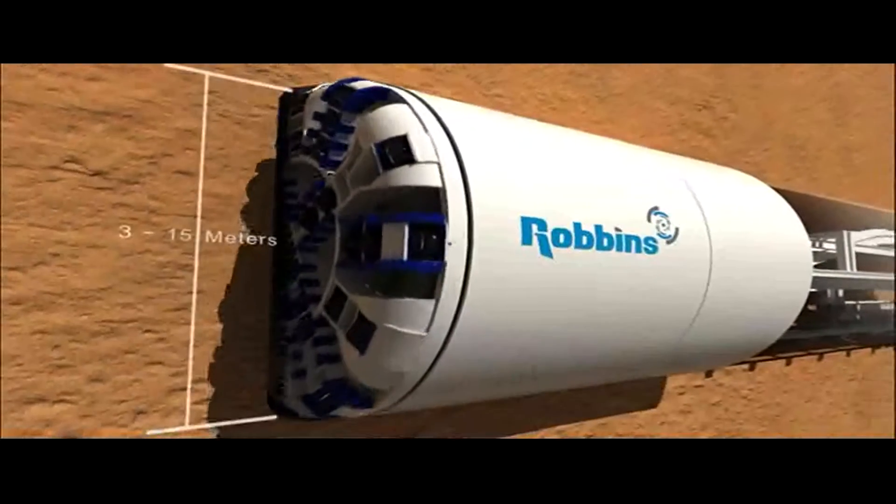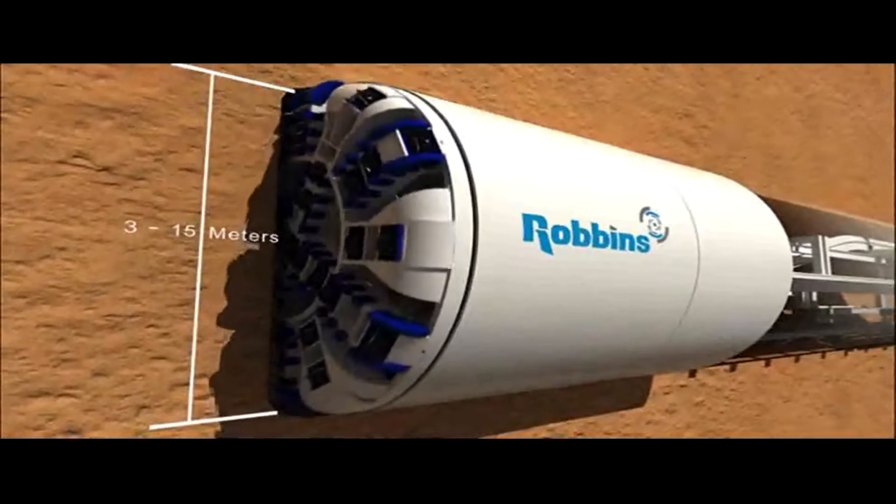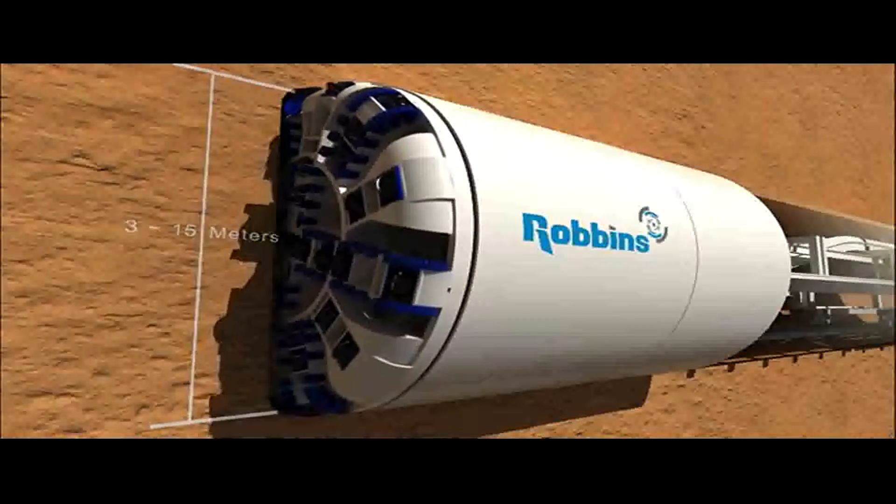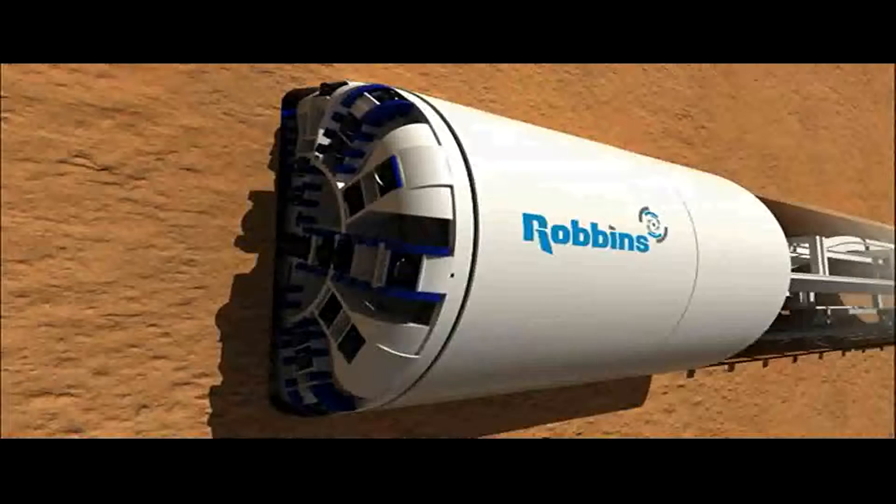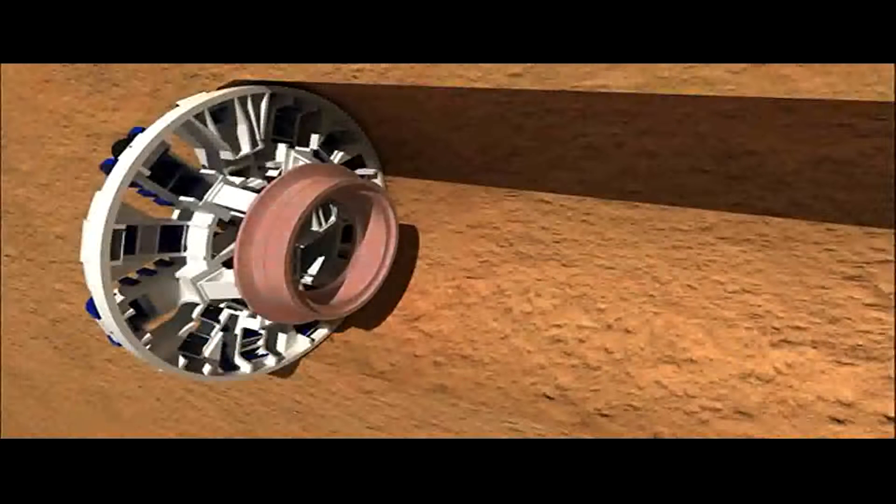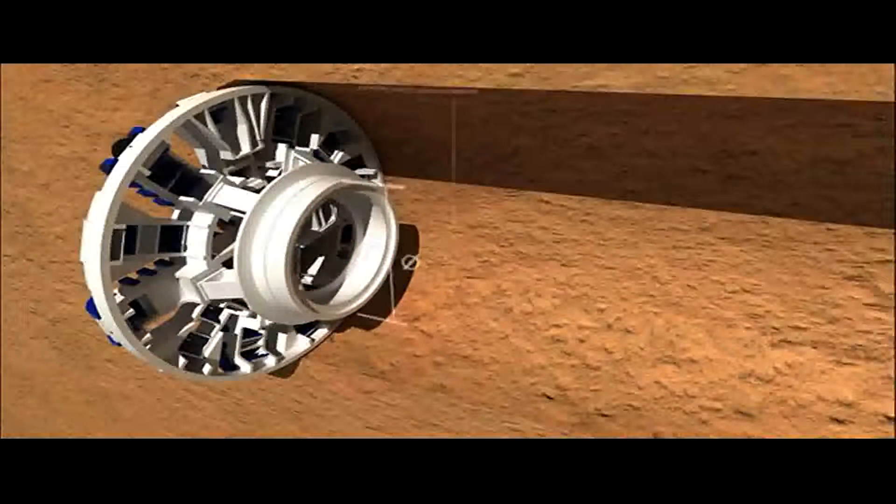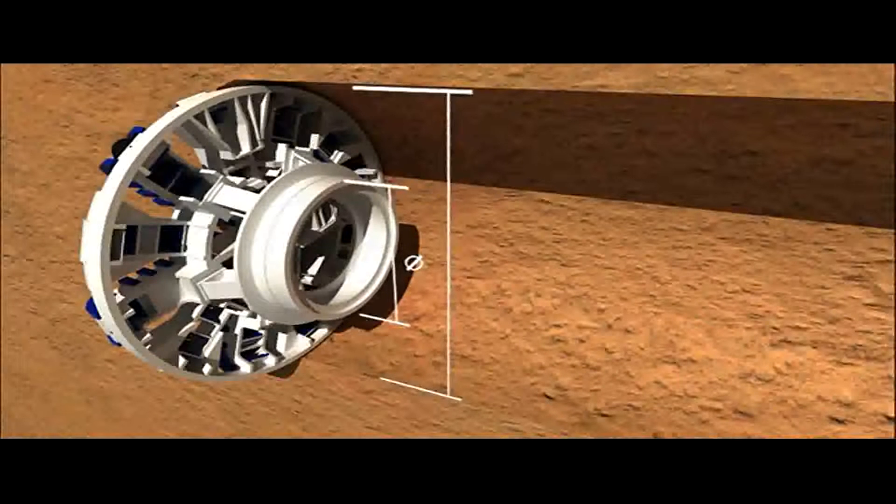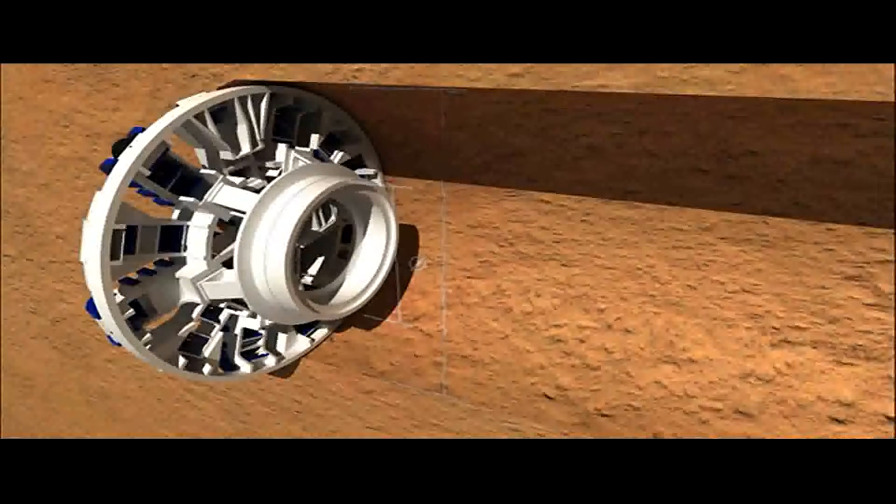Robbins' earth pressure balance machines range in diameter from 3 to over 14 meters. The front of the tunnel boring machine consists of a rotating cutter head in which cutting tools are mounted. The cutter head is supported by a Robbins main bearing, which has the largest bearing-to-tunnel diameter ratio in the industry, resulting in superior bearing life.